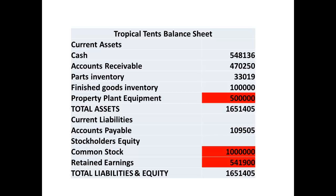Finally, figures for the asset of property and equipment, and then figures for common stock and retained earnings are entered. These were not calculated from budgets, though the retained earnings figure would be affected by the budget.